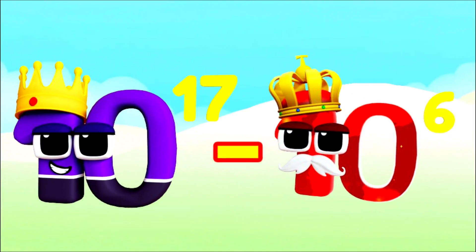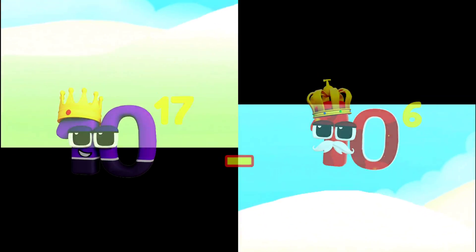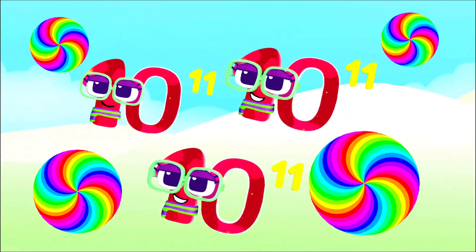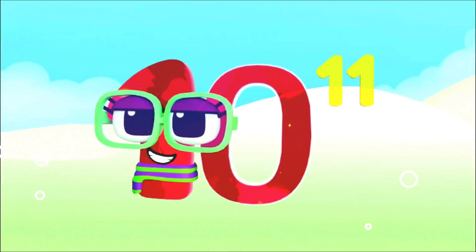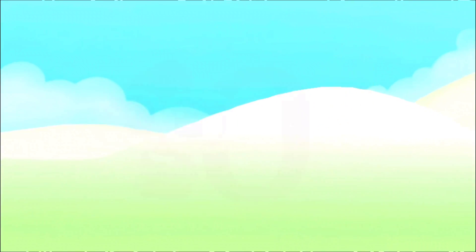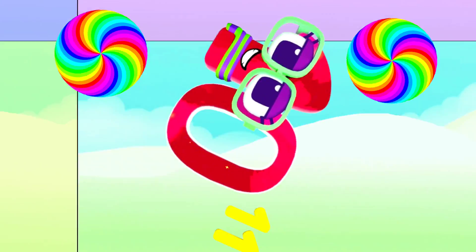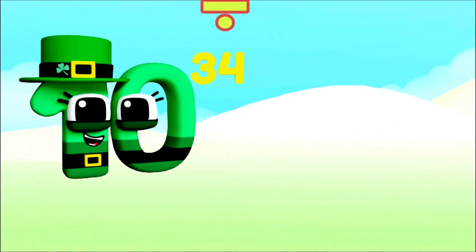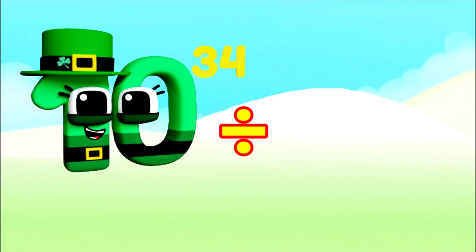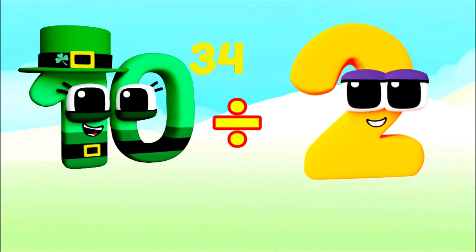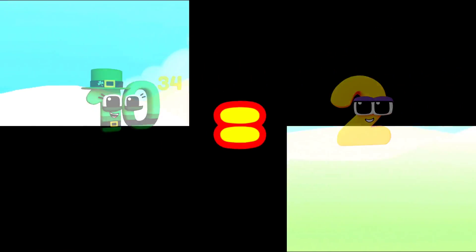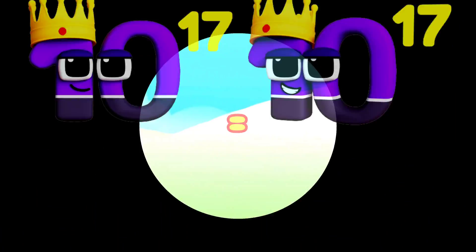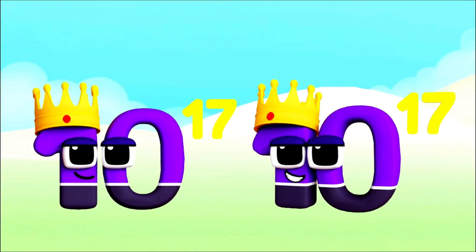Minus... I'm 1 million, and I've got 6 zeros! Equals... I'm 100 billion, and I've got 11 zeros! 10 decillion, divide 2. Equals... 100 quadrillion.